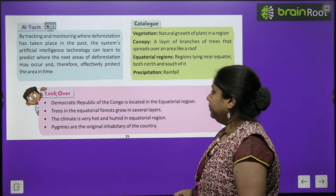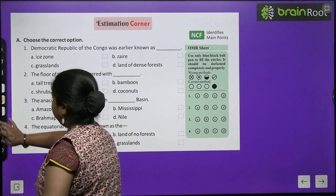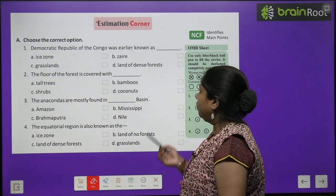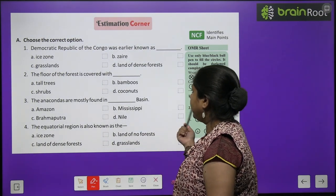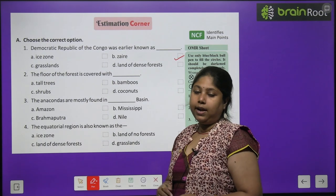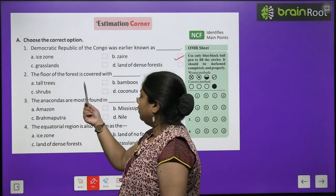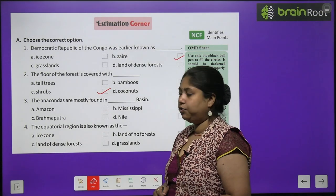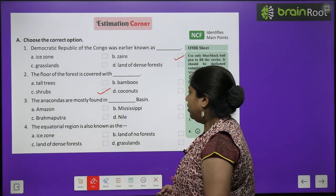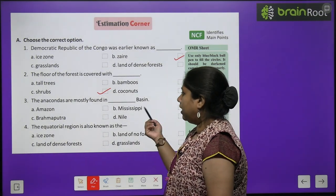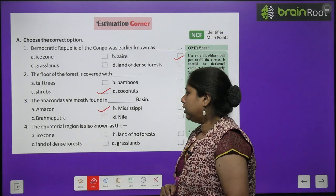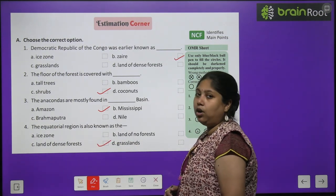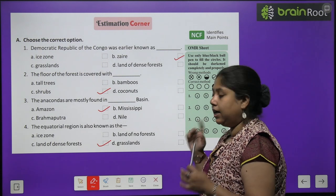Now let's do the MCQs — multiple choice questions — one by one. First: Democratic Republic of Congo was earlier known as — Ice Zone, Grasslands, Zaire, Dense Forest. The correct option is Zaire. Second: the floor of the forest is covered with — tall trees, shrubs, bamboos, coconuts. The floor of the forest is covered with shrubs. Third: anacondas are mostly found in — Amazon, Mississippi, Brahmaputra, Nile. Anacondas are found in the Amazon forests. Fourth: the equatorial region is also known as — Ice Zone, Land of Dense Forest, Land of No Forest, Grassland. It is known as Land of Dense Forest because very dense forests are found here.